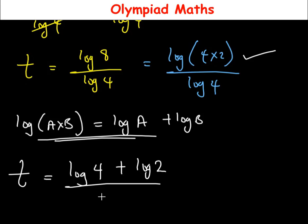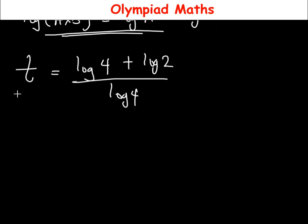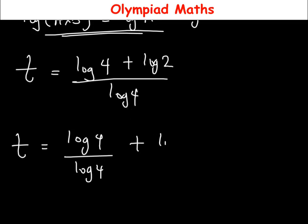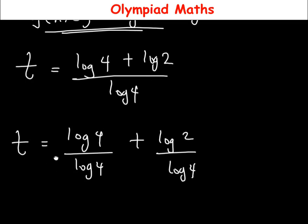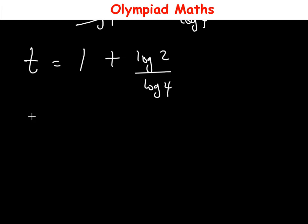From here we can split the denominator, so t is equal to log(4) over log(4), then plus log(2) over log(4). With this, log(4) divided by log(4) gives 1, so t equals 1 plus log(2) over log(4).